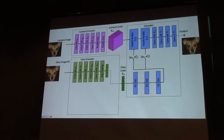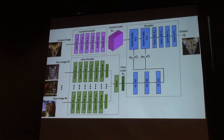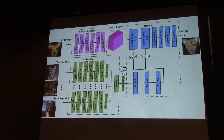To regularize training, we also use a reconstruction loss: if the content image and target class image are the same image, the output should be itself — it reconstructs itself. By performing this training, at test time, you are given a new breed like a mountain lion, which has a class vector — the style vector — and then we can translate the input dog to a mountain lion.